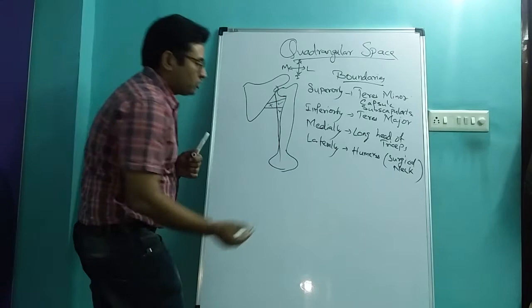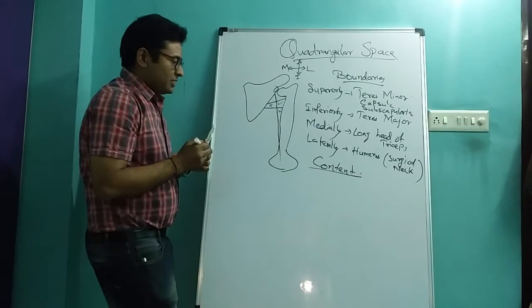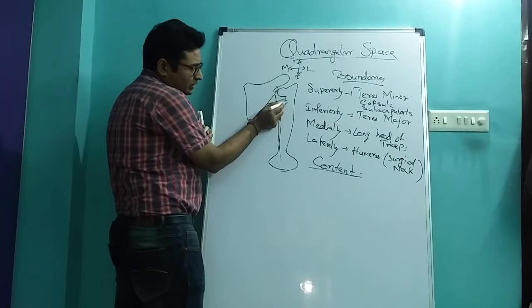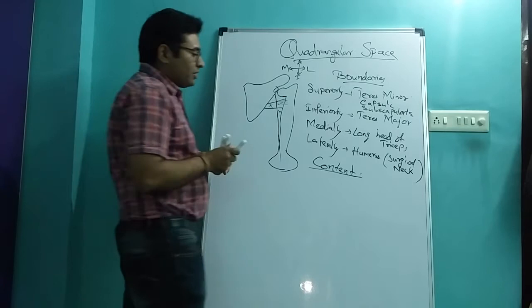Now coming to the content, what is the content of this space? As we can see here what I am representing with the green is the three structures. The three are namely: